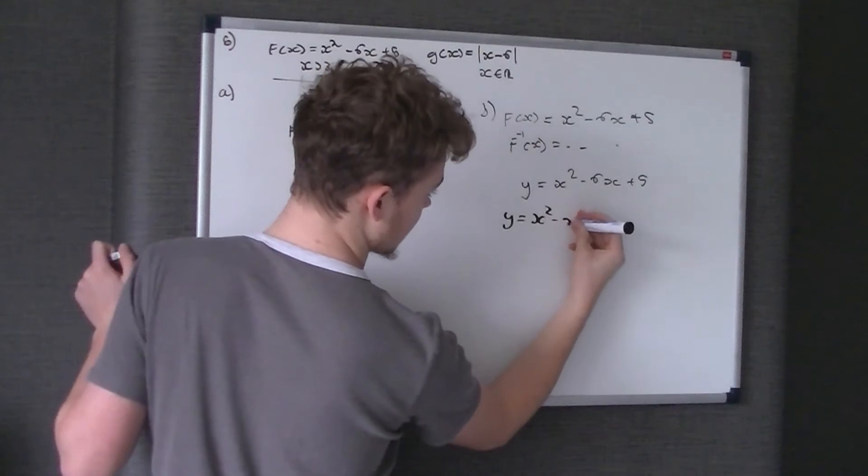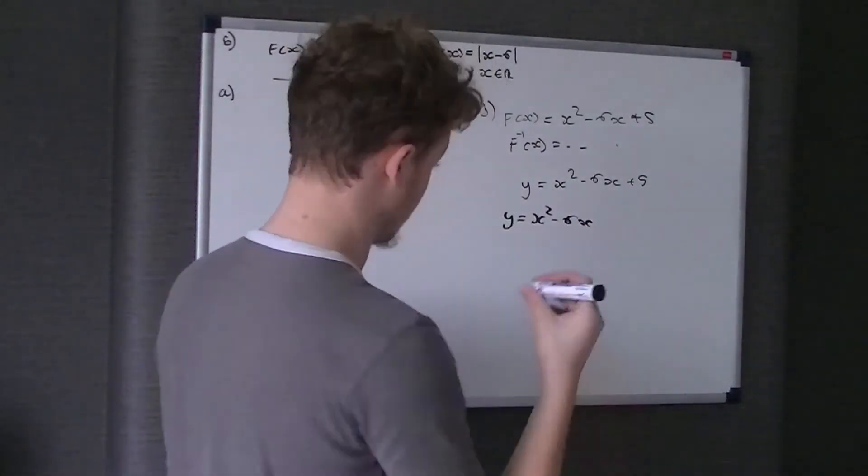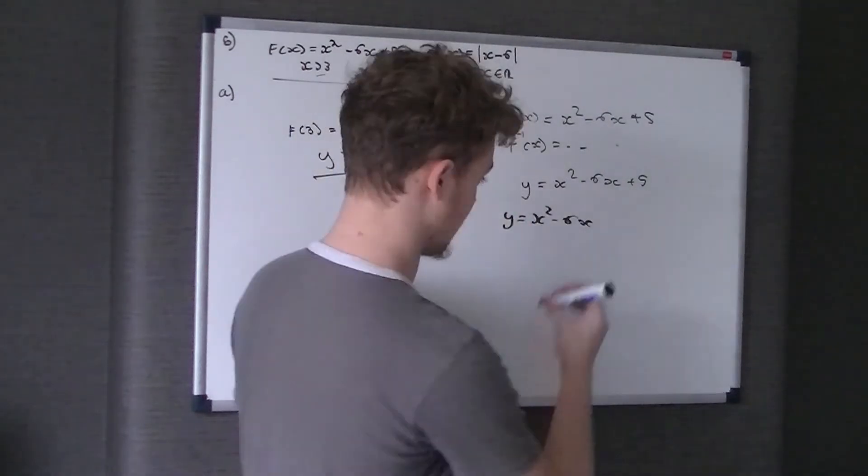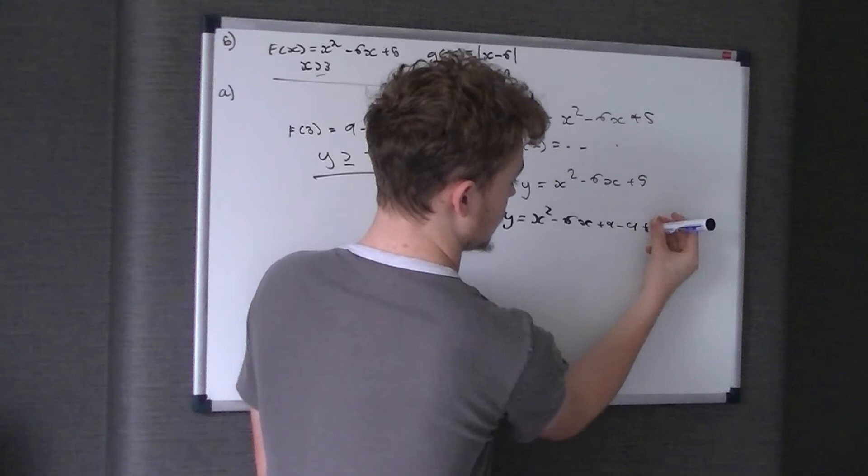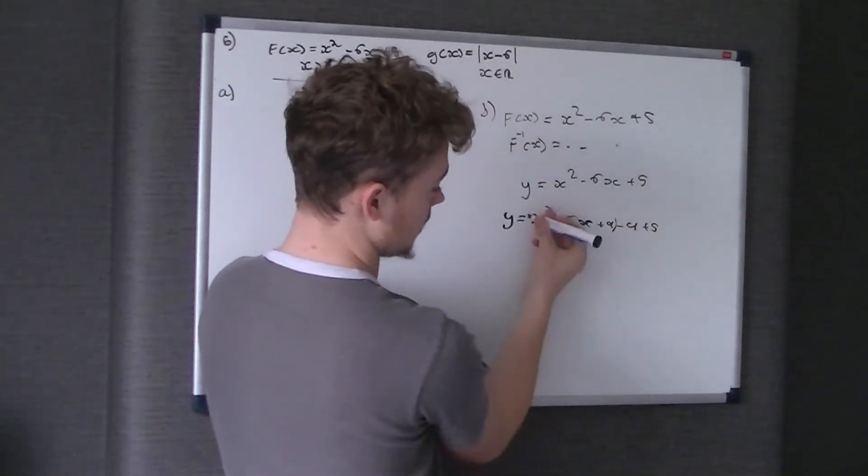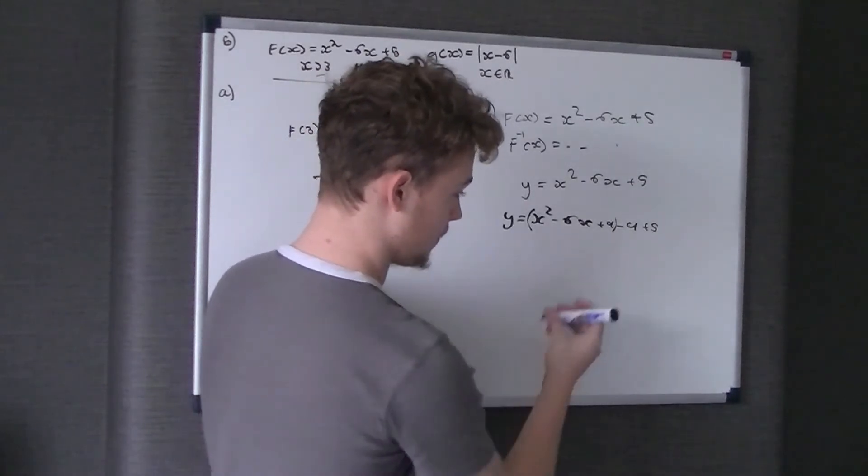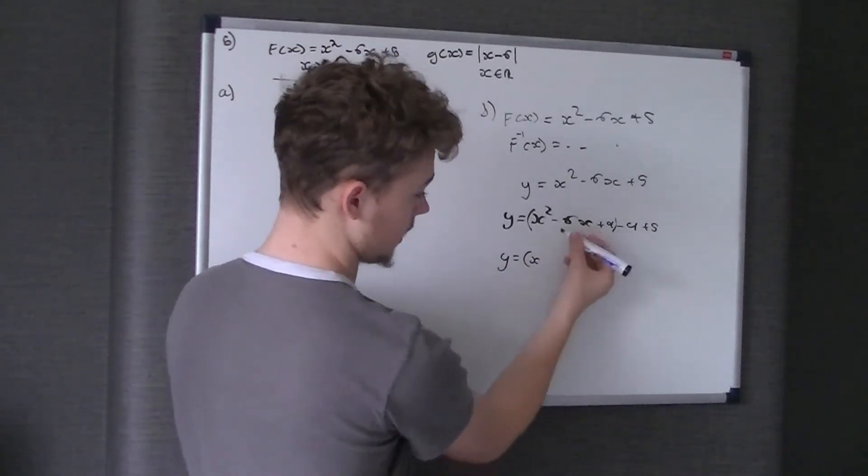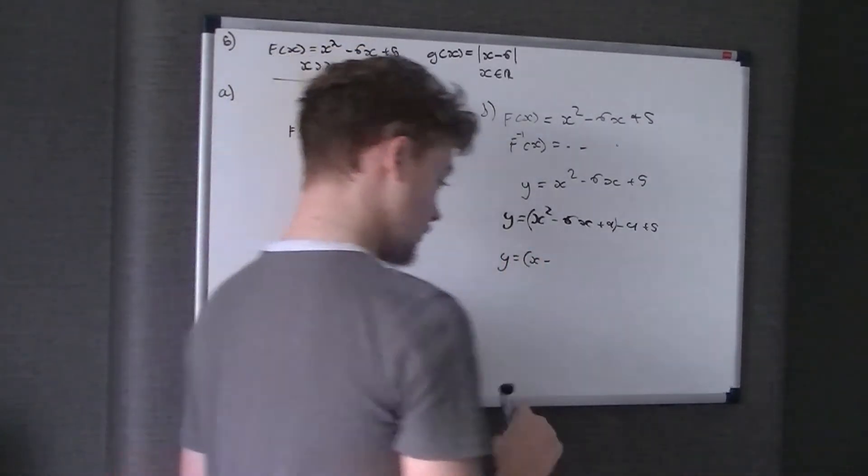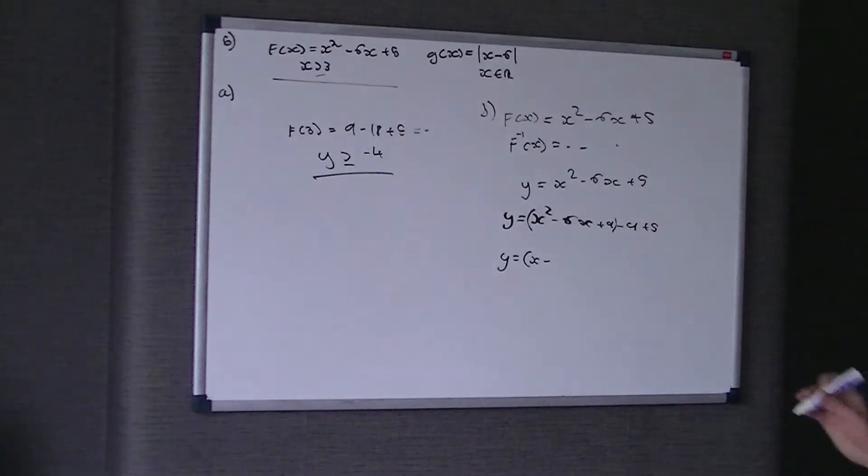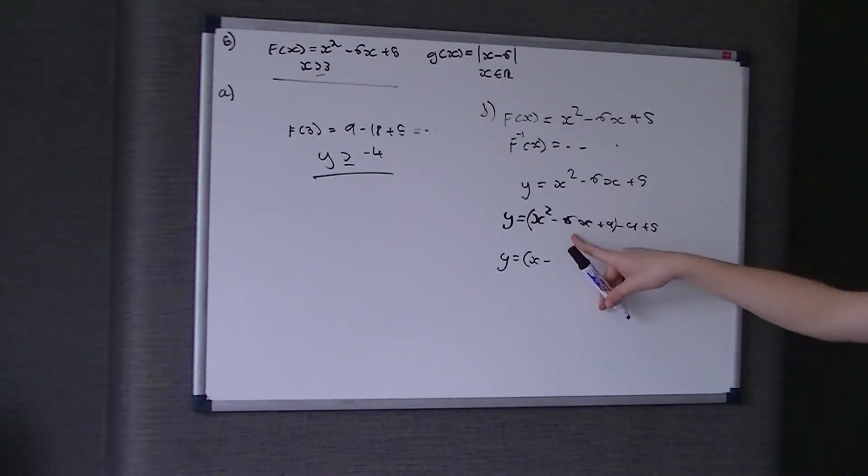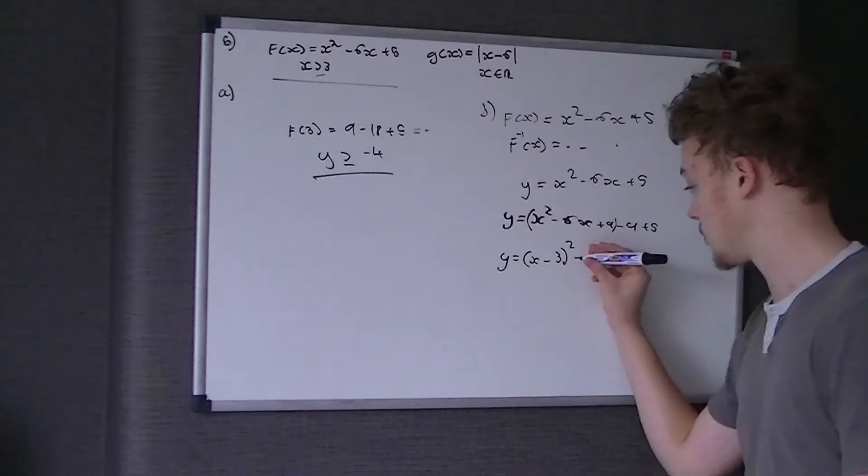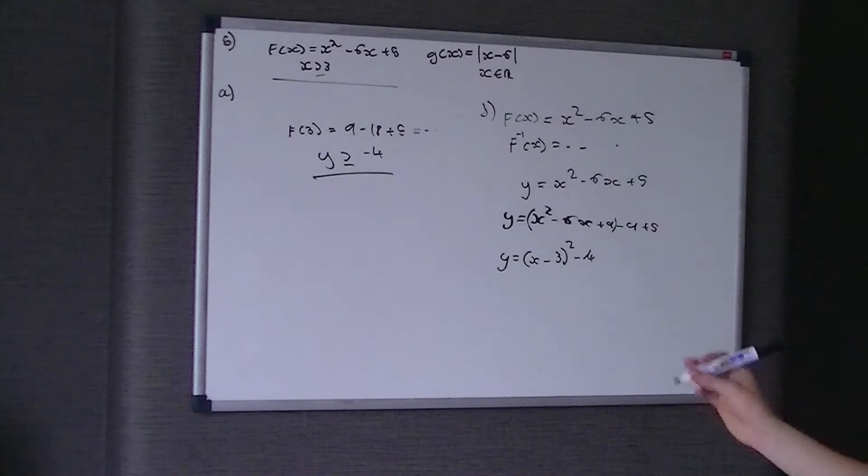So you do x squared take 6x. You have what's in front of just the x which is 6, and you half that which comes to 3, minus 3 sorry, and then you square it. Minus 3 times minus 3 is 9, plus 9, and you take that away minus 9, plus 5. You put a bracket round the x from the x squared up to the plus 9. And then you get x take 3 all squared. So that's completed the square.